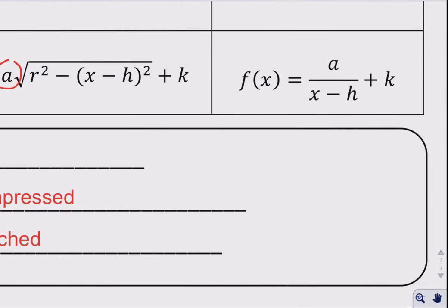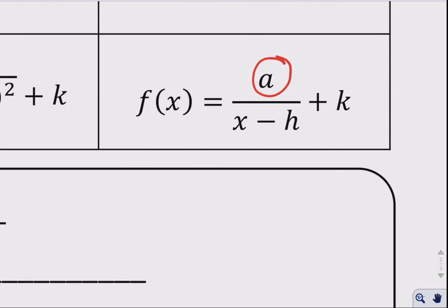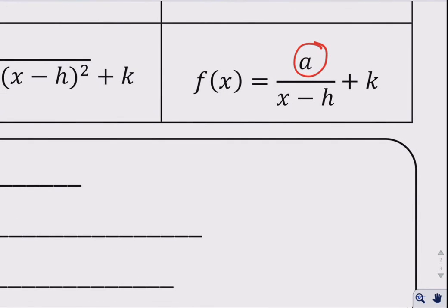Notice here that the reciprocal function, the a value has been kind of absorbed by the numerator. If you want to see this in terms of what it would look like outside the numerator, this function is really just a times 1 over x minus h plus k. But since we're multiplying, we multiply the a by the 1, and that's how we get this.